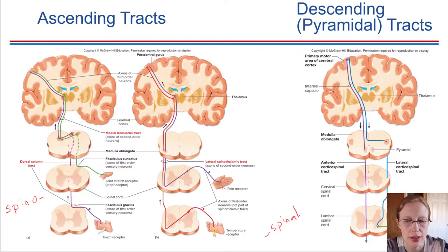So that indicates that we're talking about a descending tract. A good example of that is the lateral corticospinal tract. They begin in the cerebral cortex and descend the spinal cord.